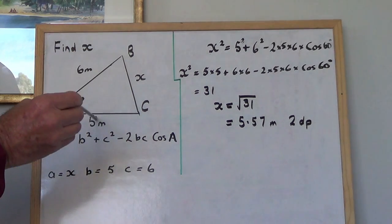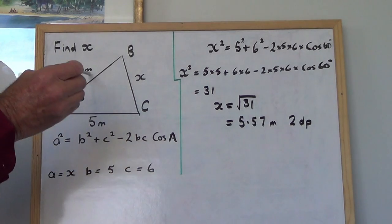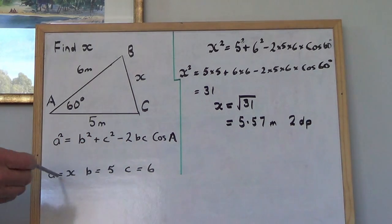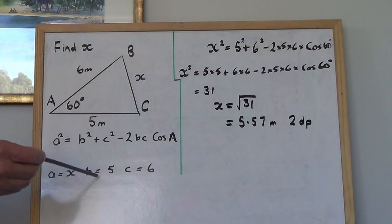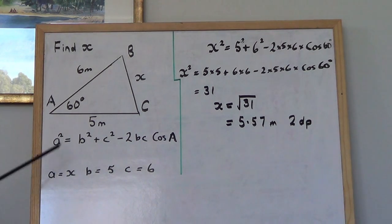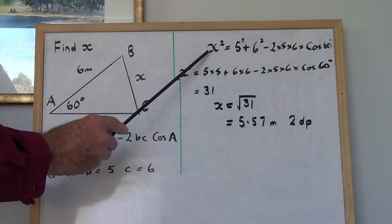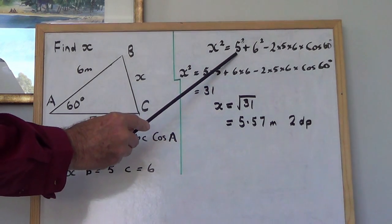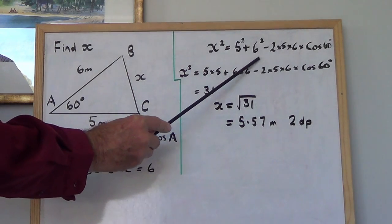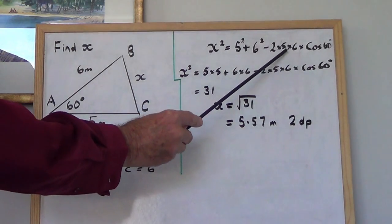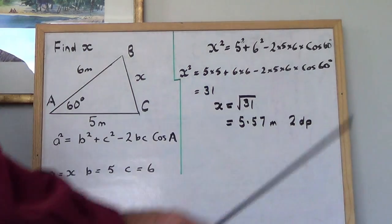Opposite angle B, it's 5. Opposite angle C, it's 6. So these are the things that we substitute into this formula here. And when we do the substitution, we end up with this equation here. x squared equals 5 squared plus 6 squared minus 2 times 5 times 6 times cos 60.